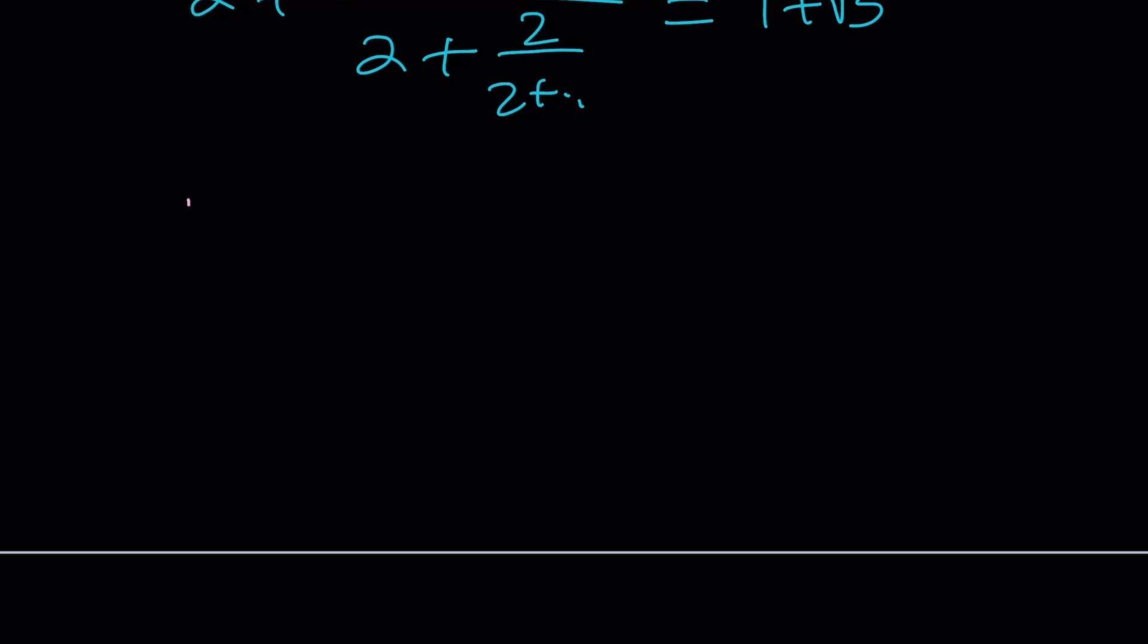So here's how we're going to define it. I have a sequence a sub n. This is the sequence. And I'm going to define the first term as 2. And to find the second term, I'm going to basically do the following. I'm going to write this as 2 plus 2 divided by 2.